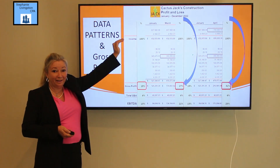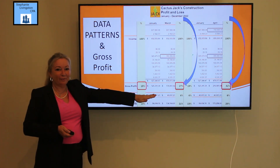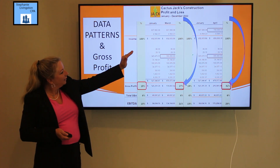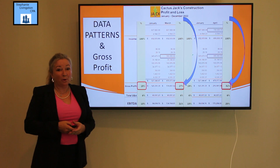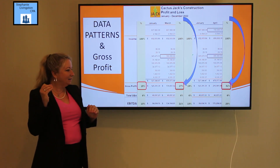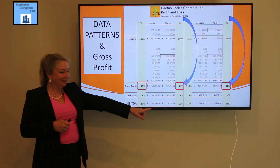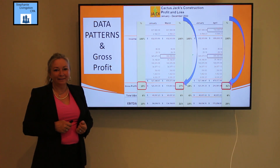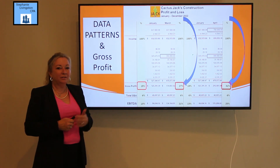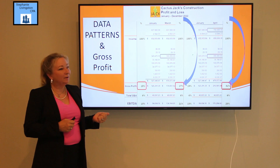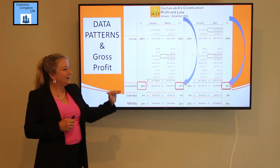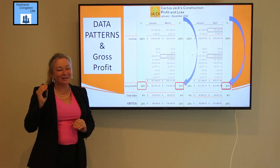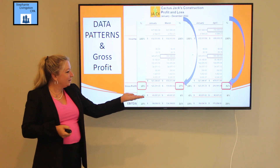In April, sales went back up to $700,000 and costs decreased, so Cactus Jack enjoyed both an increase in sales and a decrease in cost — look what that did to his margin: now he's at 31%. Assuming everything below the line stayed the same, the bottom line went up every time: it went up in February when sales increased, in March when costs went down, and in April with both an increase in sales and a decrease in cost.